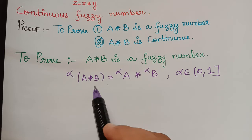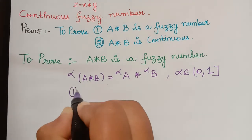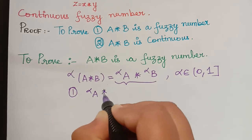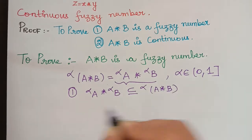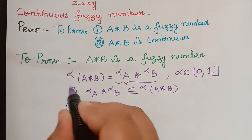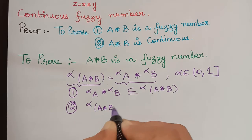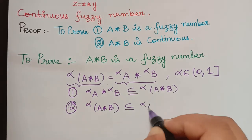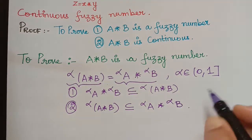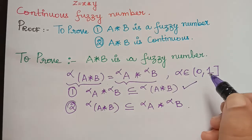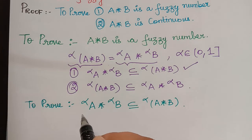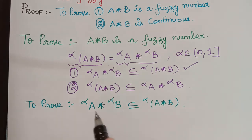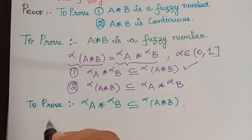To prove this equality of alpha-cuts, we divide the argument into two sub-parts. In the first sub-part we will prove that the alpha-cut of A starred with the alpha-cut of B is a subset of the alpha-cut of A★B. In the second sub-part we will prove that the alpha-cut of A★B is a subset of the alpha-cut of A starred with the alpha-cut of B. To prove the first sub-part, we consider an element from the left-hand side and show it belongs to the right-hand side.